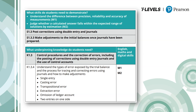In this example you can see the specialist skill S1.3 and then the sub-skill 1.3.3, followed by an extract of the underpinning knowledge related to S1.3 — K1.3, control procedures and the correction of errors, including the posting of corrections using double-entry journals and the use of control accounts. This is followed by a subset of knowledge 1.3.4, giving further information as to the depth and breadth. The English, Maths and Digital skills from the general competency framework are identified in the right-hand column — in this example M1 and M2. Sometimes two or three sub-skills are grouped together with the underpinning knowledge listed below, where the knowledge applies across a number of sub-skills.